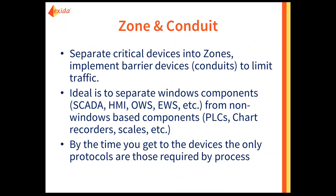Once you begin the actual work, you separate your network into critical zones and use a barrier device — a conduit — to limit traffic flowing from zone to zone. My strong recommendation is to separate your Windows components, such as SCADA systems, HMIs, and operator workstations, from non-Windows devices like PLCs, chart recorders, and scales — devices that do not like the broadcast chatter that Windows produces on the network.